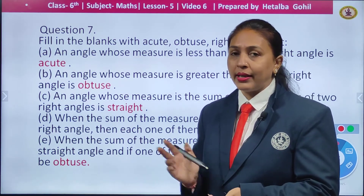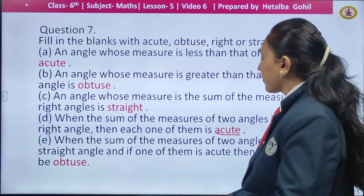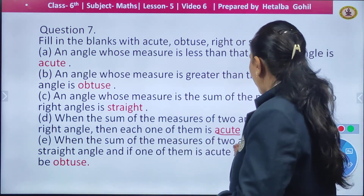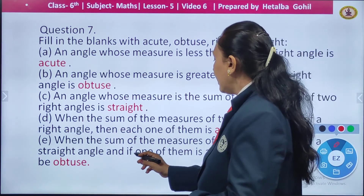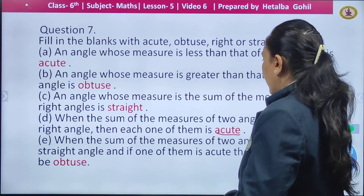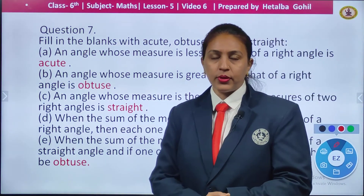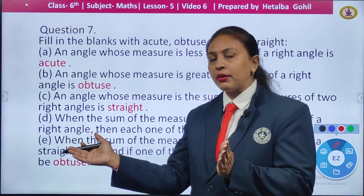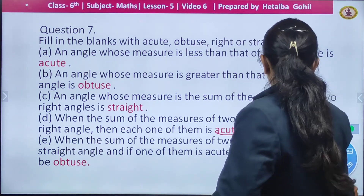Because if two angles together measure 90 degrees, each is 45 degrees, and 45 is less than 90, so each will be acute. When the sum of the measures of two angles equals that of a straight angle and one of them is acute, then the other shall be obtuse — because if one is less, the other must be greater to complete the measurement.